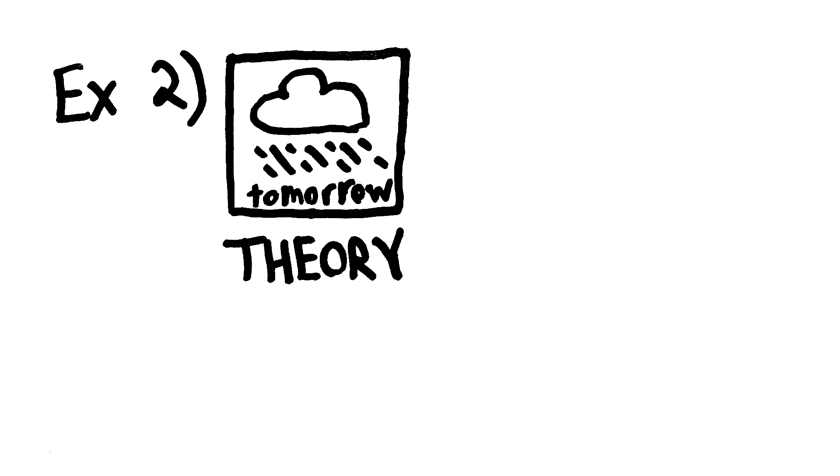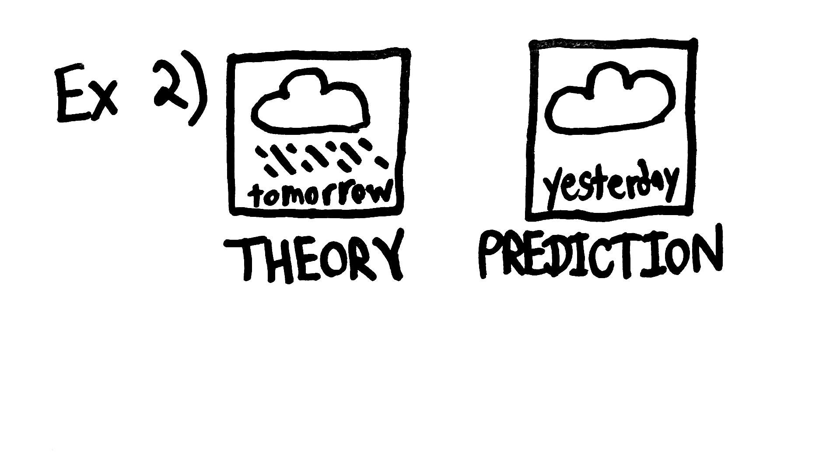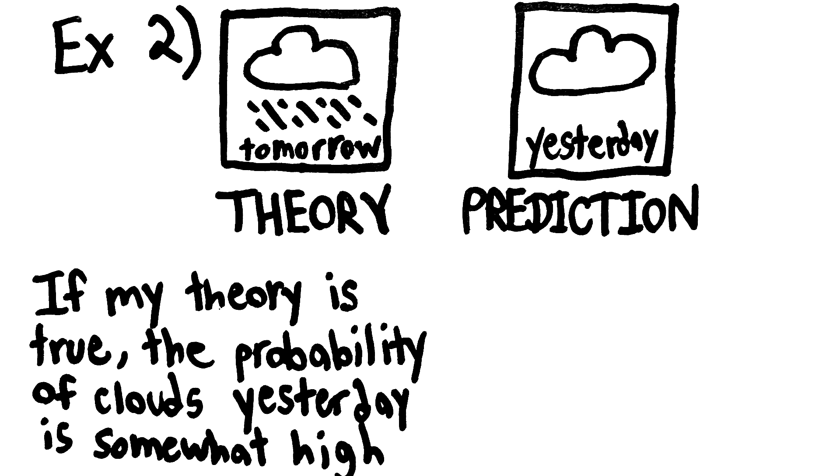I have a theory that it's going to rain tomorrow. Does this theory predict that there would have been clouds yesterday? Even though we are talking about something in the past, we could still talk about predictions in the Bayesian sense. Because we could say, if we imagine that it is in fact going to rain tomorrow, it would probably have been cloudy a couple days before.